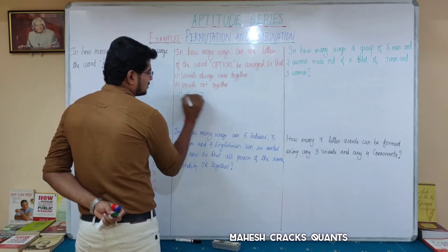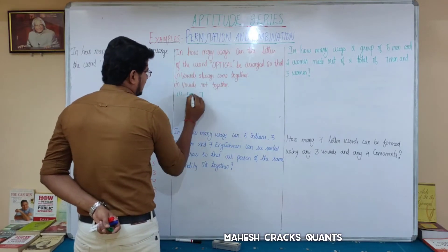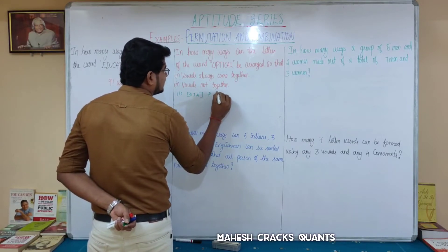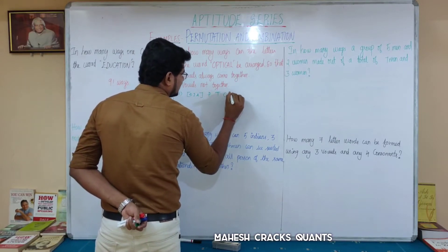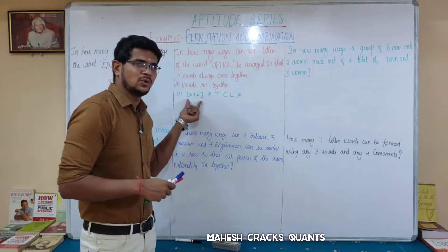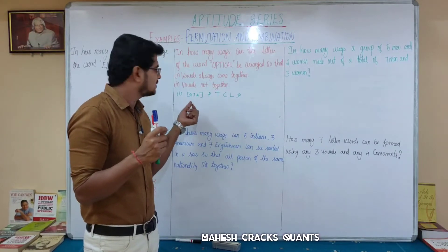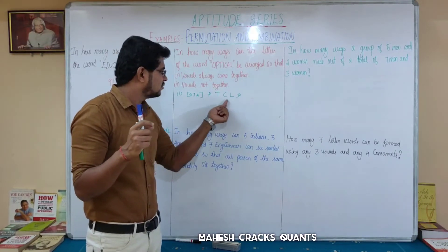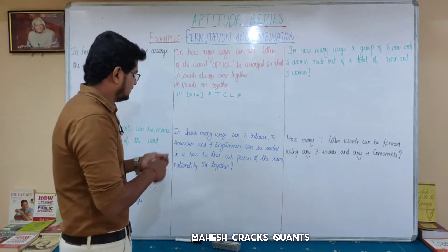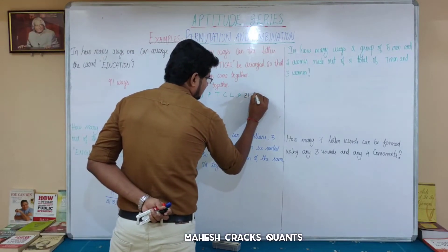What are the vowels in 'optical'? O, I, A — these are the 3 vowels. Remaining consonants are T, T, C, L. We treat the vowels as one single unit. So total letters become 5 units. These 5 units can be arranged in 5-factorial ways. The 3 vowels among themselves can be arranged in 3-factorial ways.